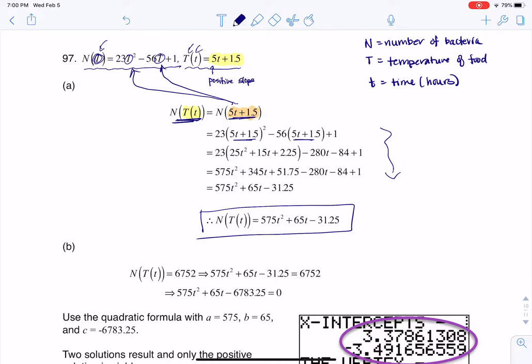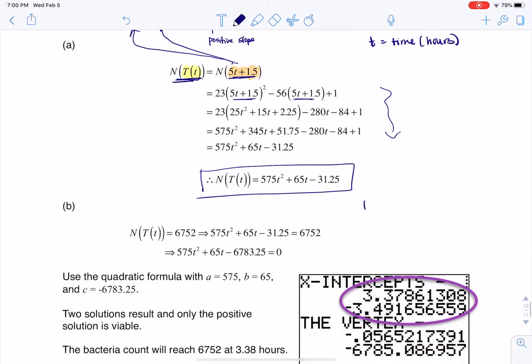All right, and then it says find the time. So for part B, when it says find the time in the directions, that's saying find little t. So find the time when the bacteria count reaches 6,752. So I basically want to set this thing equal to 6,752 and solve for little t here. And that's what you see me doing here. Now I have a quadratic function.